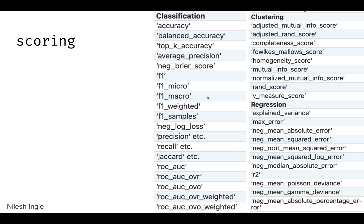This is the list from the scikit-learn docs showing the strings that can be specified when using these scoring methods. There are three broad sections: classification, clustering, and regression.